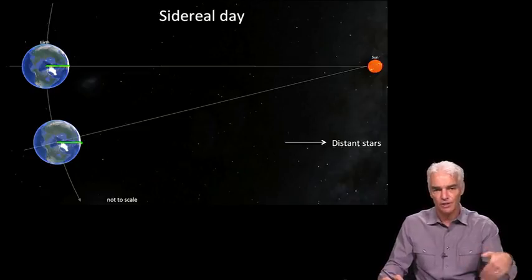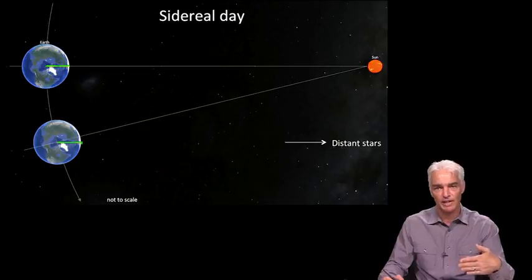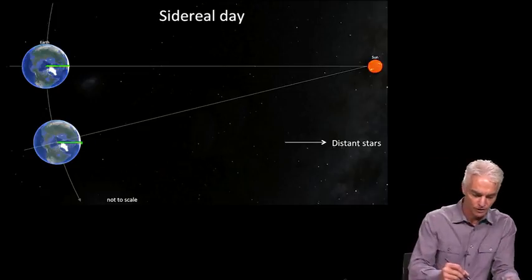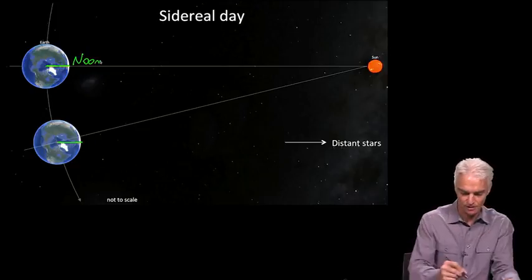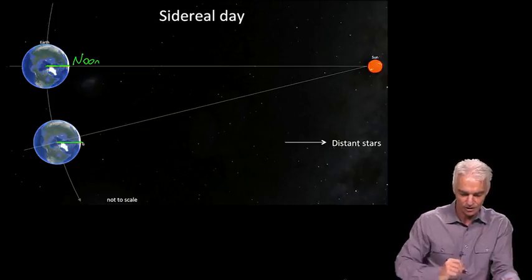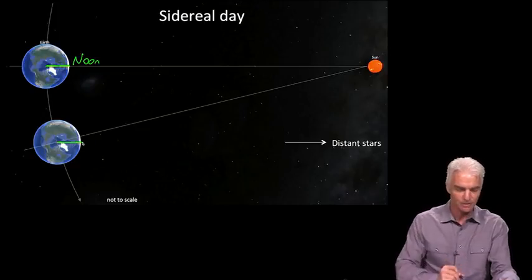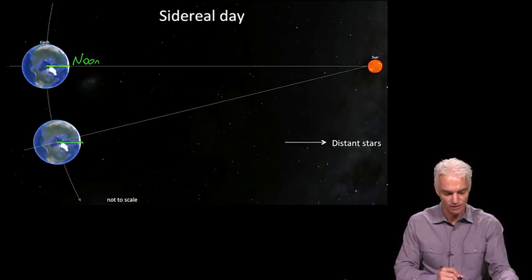So if it were noon over here, which it is because the Sun is directly overhead, it's not yet noon over here because you're not facing the Sun. The Sun is no longer directly overhead. So when will it be noon? Well, a little bit later.